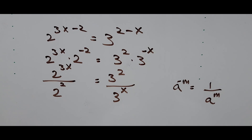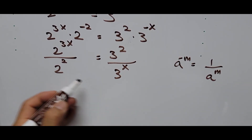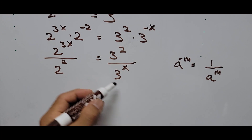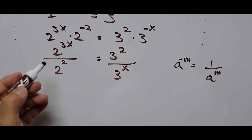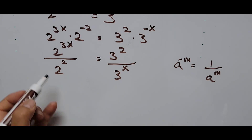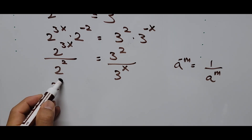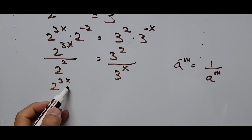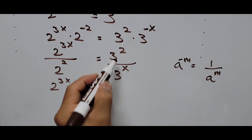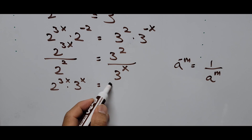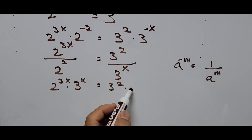From here we cross-multiply, bringing all variables to the left side and constants to the right side. That gives us 2 raised to 3x times 3 raised to x equals 3 raised to the second power multiplied by 2 raised to the second power.